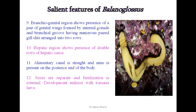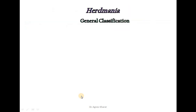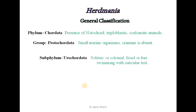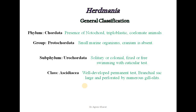This is Balanoglossus in its natural condition. The second organism from Protochordata is Herdmania. Let us learn its general classification. It belongs to phylum Chordata, group Protochordata, subphylum Urochordata, class Ascidiacea, family Pyuridae, and genus is Herdmania.